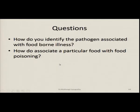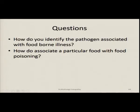In this session we saw how to identify organisms causing specific types of food poisoning, what evidence to look for, and what confirmatory tests can be done to identify not only the organism but also to confirm the food source. The two key questions are: how do you identify the pathogen associated with the food-borne illness, and how do you associate a particular food with the food poisoning? Thank you.